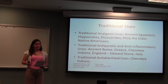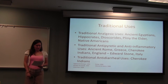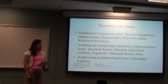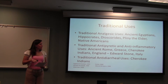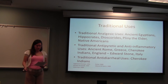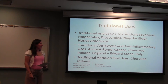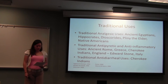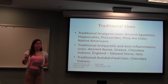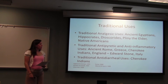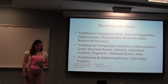It has a lot of traditional uses because it's been around for a really long time. The ancient Egyptians used it for pain. Hippocrates and Dioscorides recorded that it was used as a treatment for gout and rheumatic joint diseases. Hippocrates also recorded that you could chew the leaves during childbirth as a way to deal with the pain. Pliny the Elder recorded its use as an analgesic.